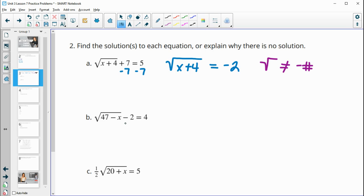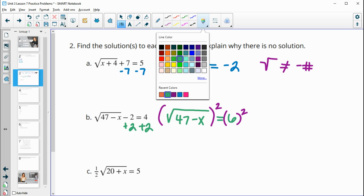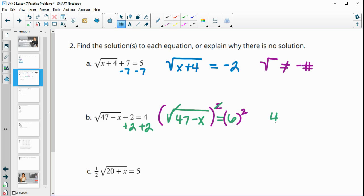Part b will isolate the square root again. So we'll add two to both sides. So we end up with the square root of 47 minus x equals six. So this is fine. We have a square root equal to a positive. So then we're going to square both sides. And so when we square both sides, that square root and the squared will cancel. So we end up with 47 minus x equals 36. So then we can subtract 47 from both sides. 47 minus 47 is 0. So we're left with negative x. And 36 minus 47 is negative 11. So then we'll divide by negative 1. And we get that x equals positive 11.